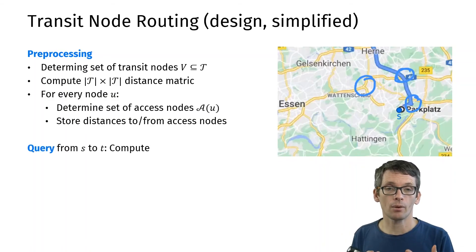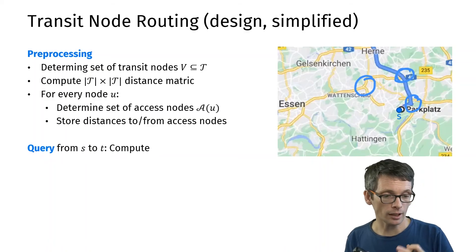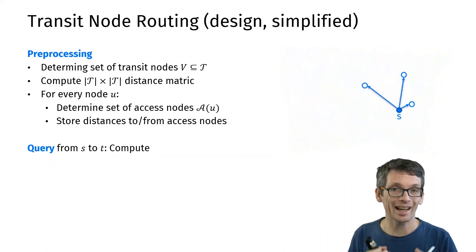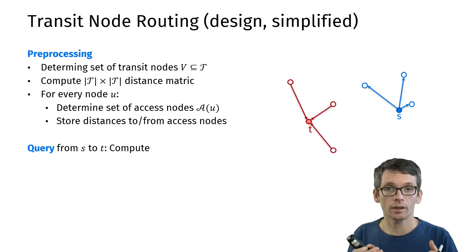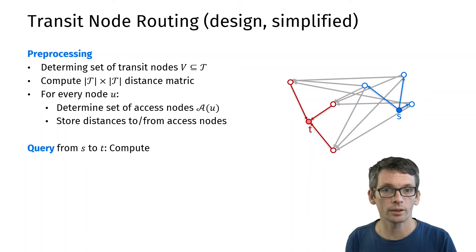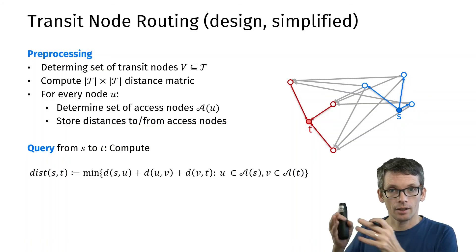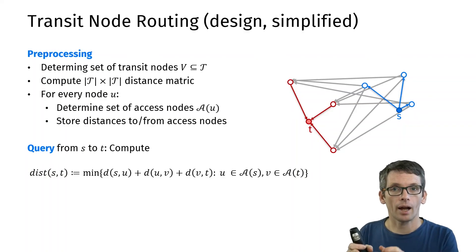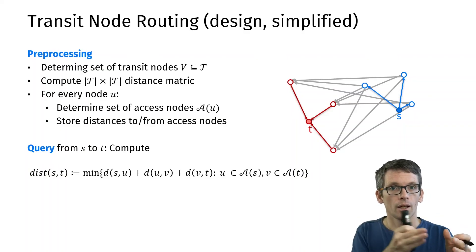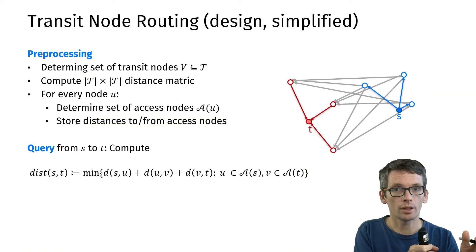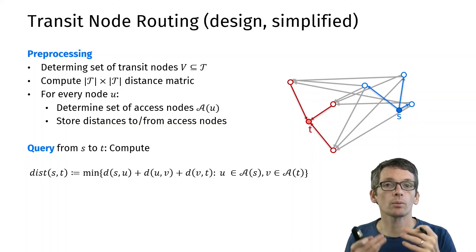Now a query is very simple. Again, I'm starting at my parking lot. I have my three access nodes. Let's say I want to go to t. T also has access nodes. Let's say it also has three. Now, between any pair here, and I only have three times three, so nine pairs, I have pre-computed the distance. So out of now the nine distances that I get, and that is distance from s to its access node, access node to access node of t, then from the access node of t to t, if I take all of those distances, I take the smallest one, I found my shortest path. And that's very fast.